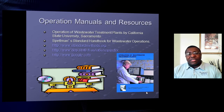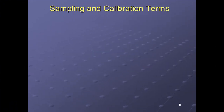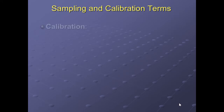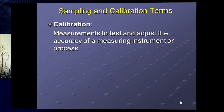I would still start with your Standard Methods book for any sampling you want to do. Now let's go over some sampling and calibration terms. Calibration is the measurement to test and adjust the accuracy of a measuring instrument or process — you calibrate an instrument to make sure it's operating correctly, because if it's not, your sampling is worthless.